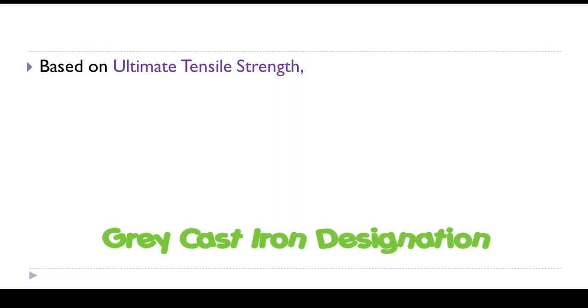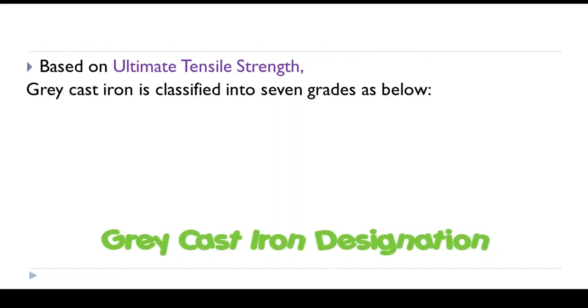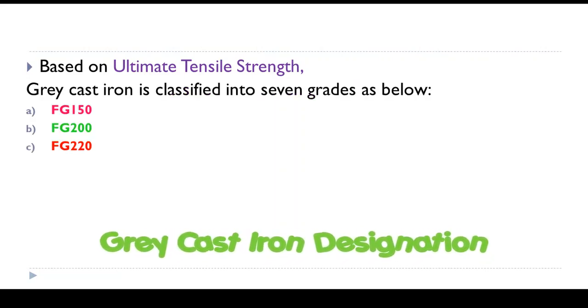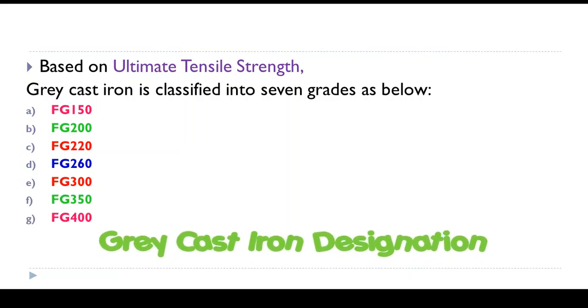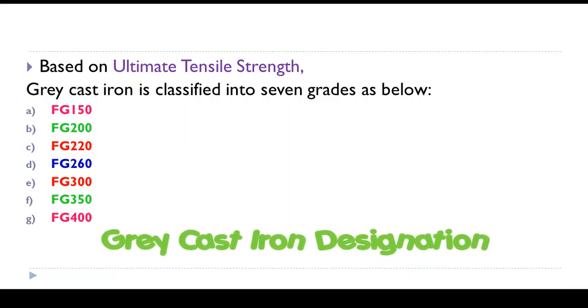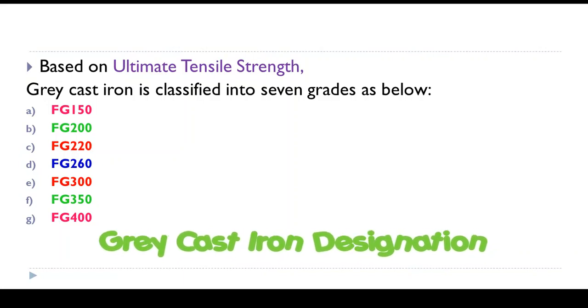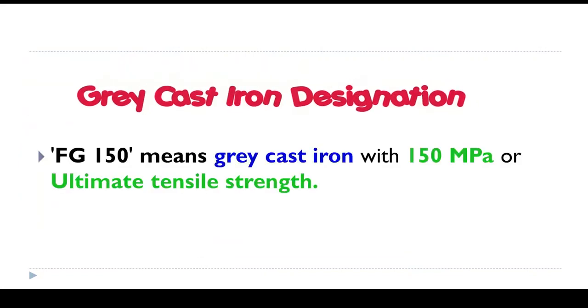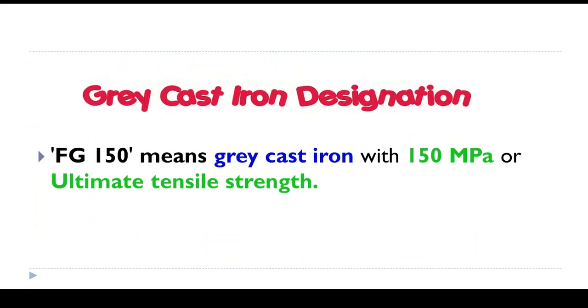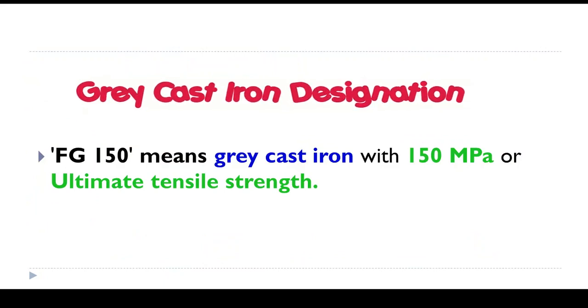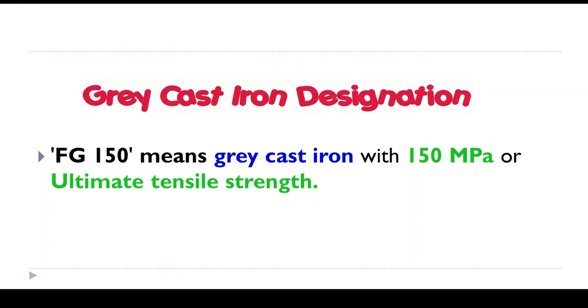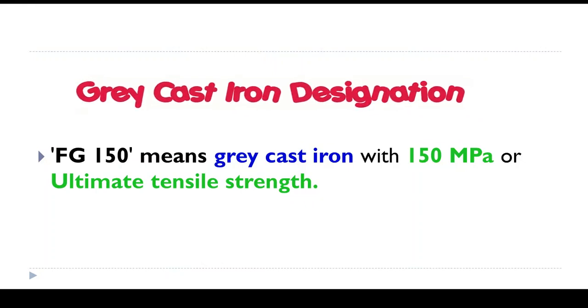Grey cast iron is designated based on ultimate tensile strength. There are 7 grades from FG150 to FG400. FG150 means grey cast iron with 150 MPa or 150 N/mm² of ultimate tensile strength.